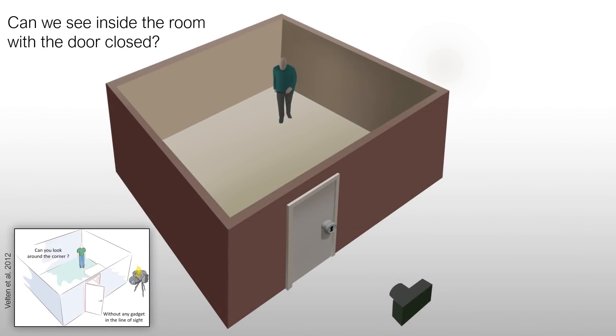Previous work in NLOS imaging was motivated by the question, can you see around a corner using an open door? In this work, we instead ask, is it possible to see inside a room using the keyhole of a closed door? The latter problem is significantly more challenging because we can only sample light from a single optical path.